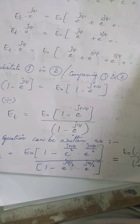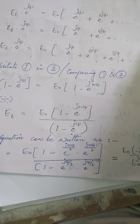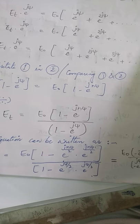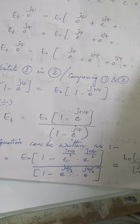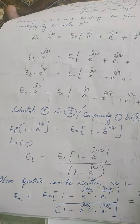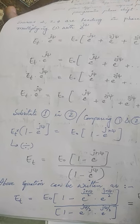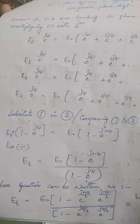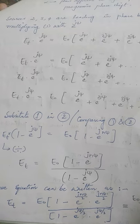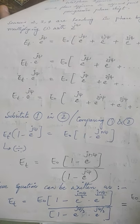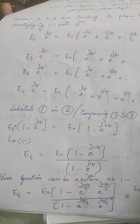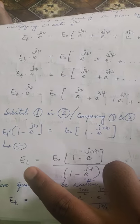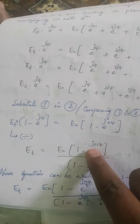Let us continue with the previous topic. We are going to prove that an N-element array with the array factor from downwards is 13.62 dB. For proving that, we are continuing our total electric field. Till now we have derived ET equals E0 into (1 minus e^(jN·psi)) divided by (1 minus e^(j·psi)).